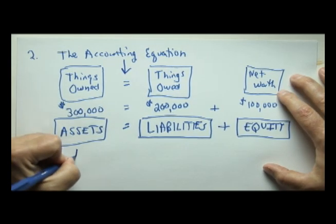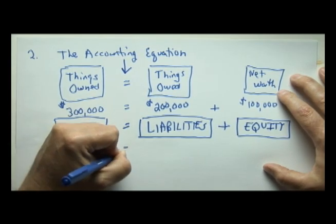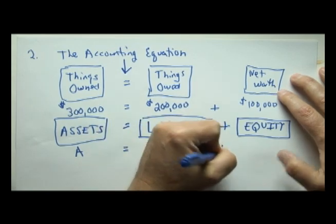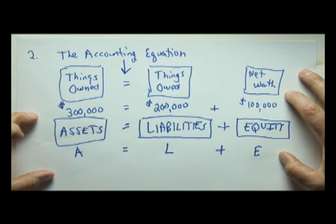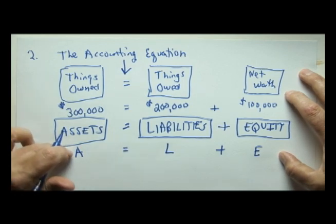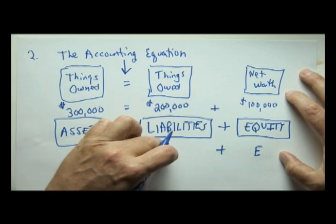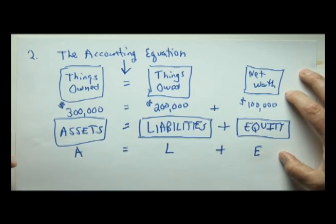We can abbreviate assets with A on the left, and L plus E on the right. Sometimes I tell my students that this equation is not a root beer, but it's a pale ale: A on the left, L and E on the right.